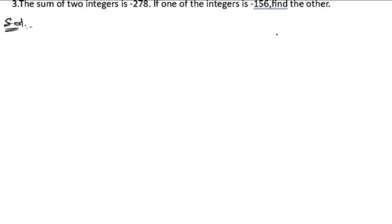We know one integer, so what we need to do is find the other integer. Let us write down what they have given. The sum of two integers means we can write: first integer plus second integer equals minus 278.